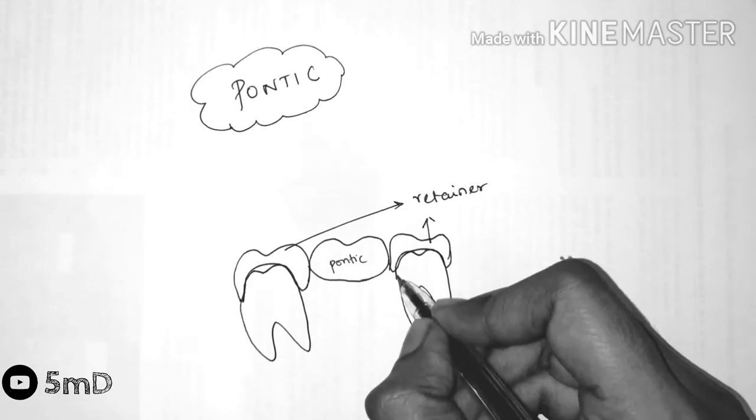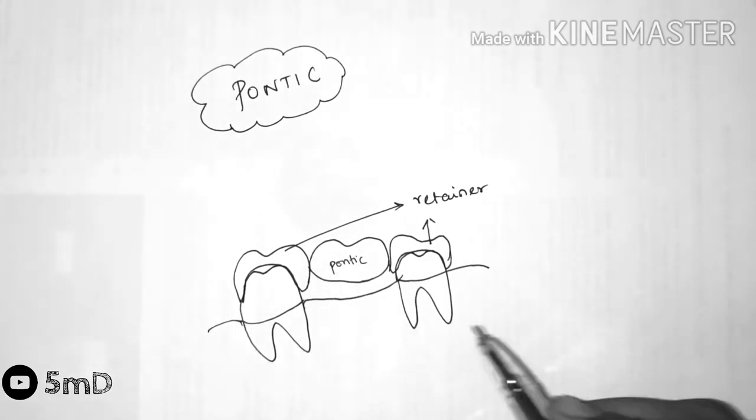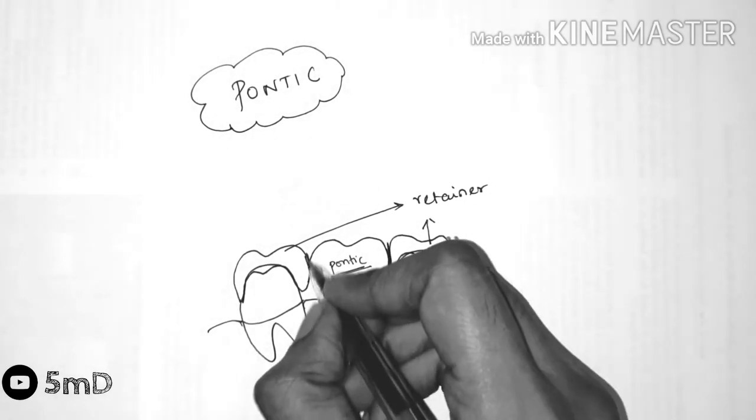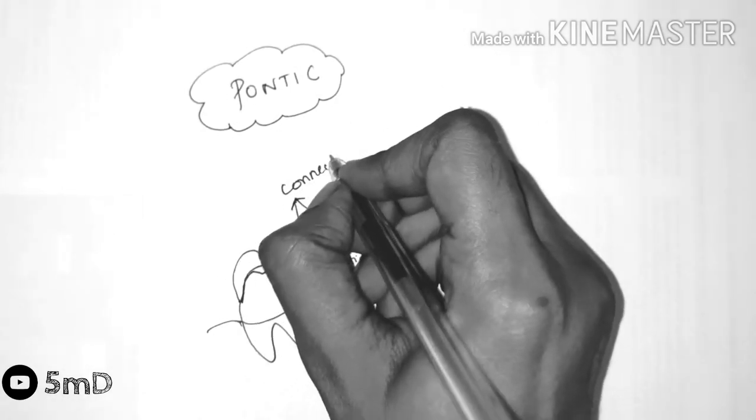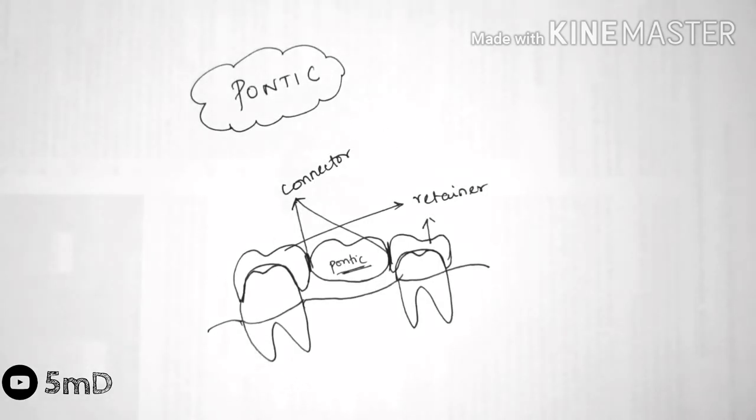The retainer unites the abutment to the remainder of the restoration. It helps in the stabilization and retention of the prosthesis. The retainer and the pontic are connected together by the connectors. The abutment teeth are nothing but the natural teeth adjacent to the edentulous space.